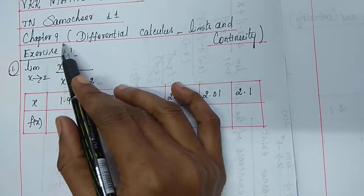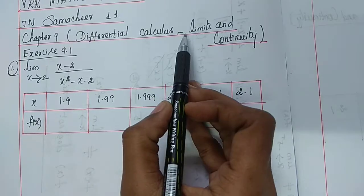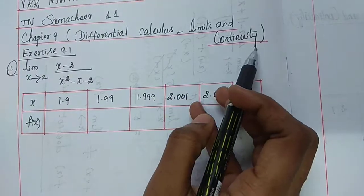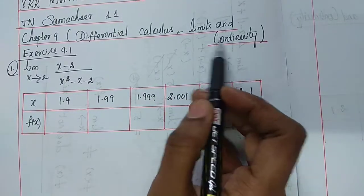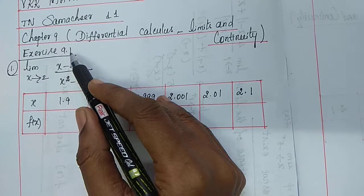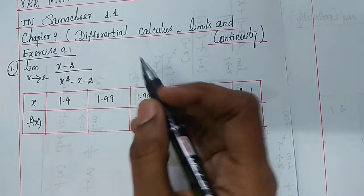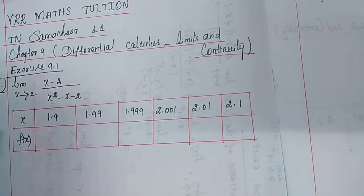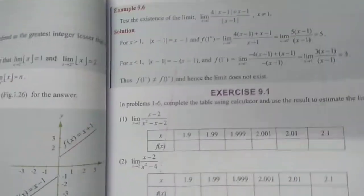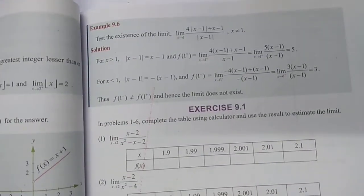Chapter 9: Differential Calculus — Limits and Continuity. Exercise 9.1, Question No. 1.